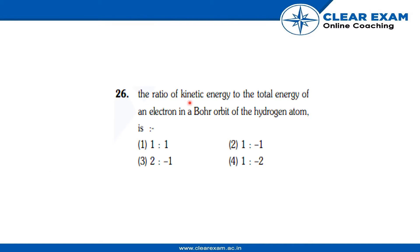The ratio of kinetic energy to the total energy of an electron in a Bohr orbit of the hydrogen atom is: option 1 - 1:1, option 2 - 1:-1, option 3 - 2:-1, option 4 - 1:-1.